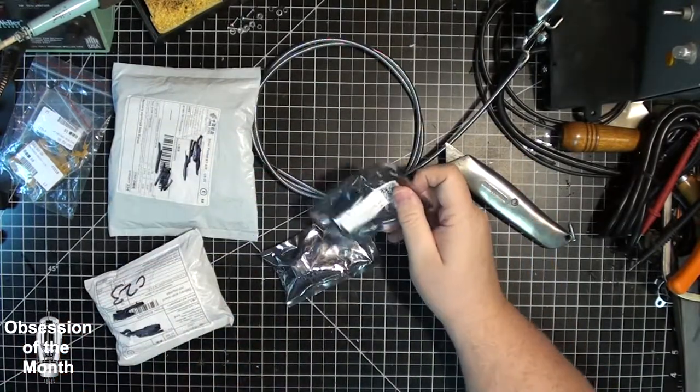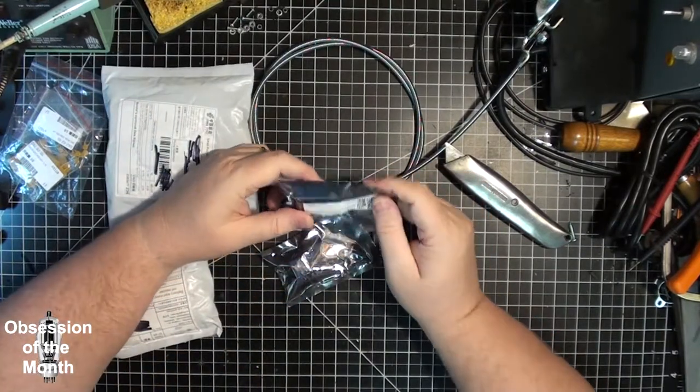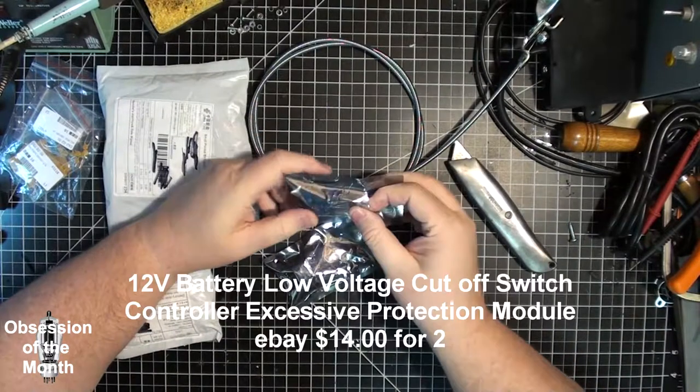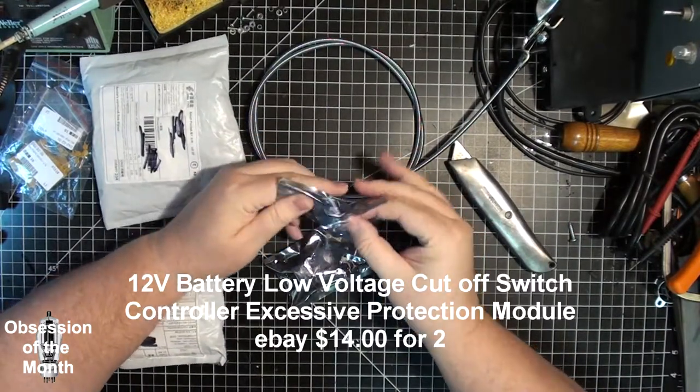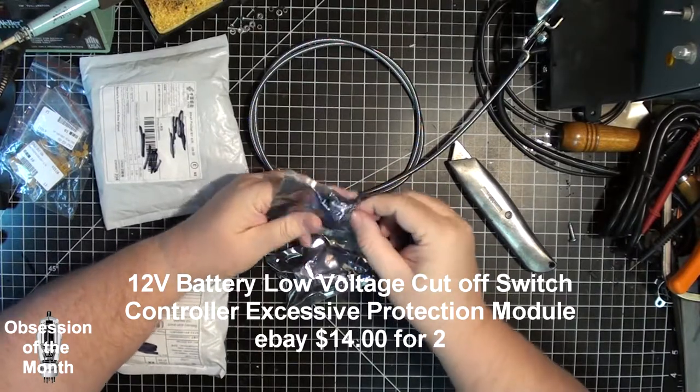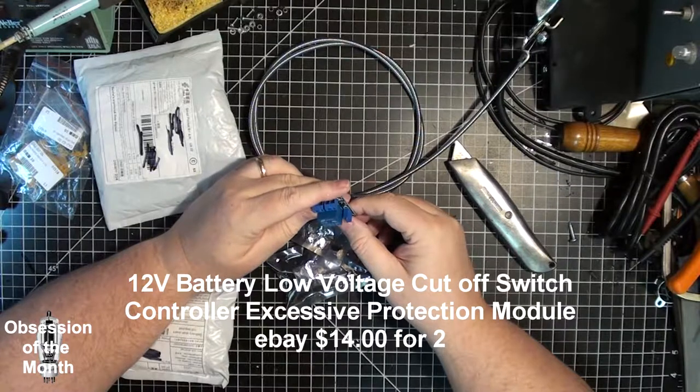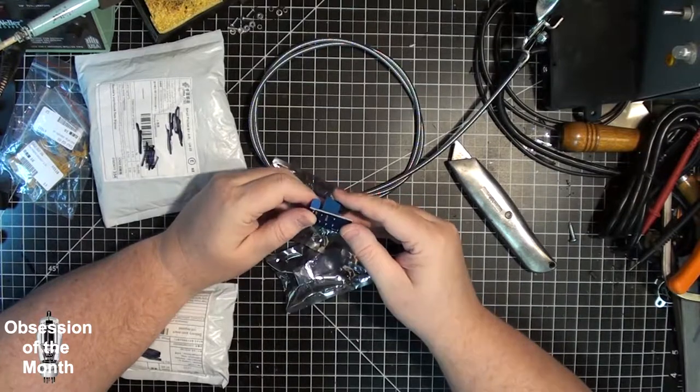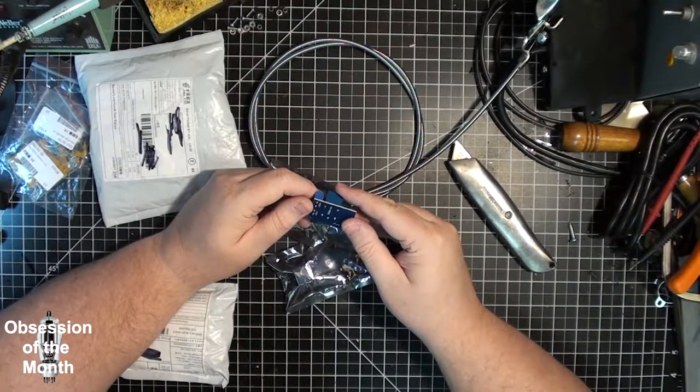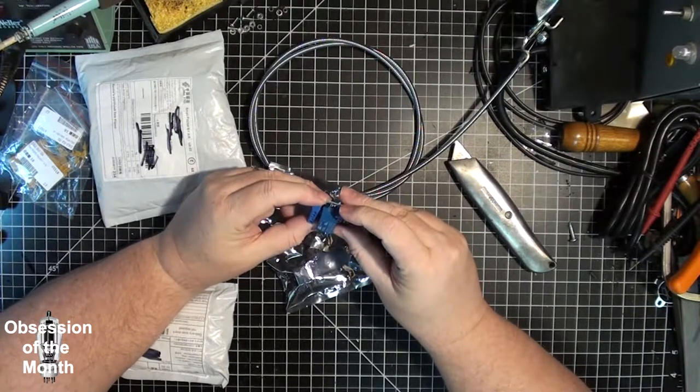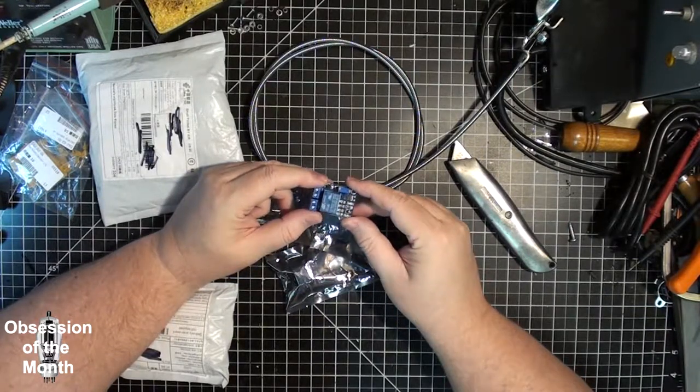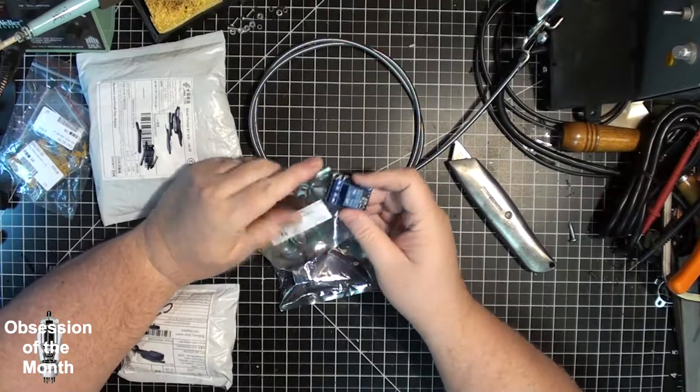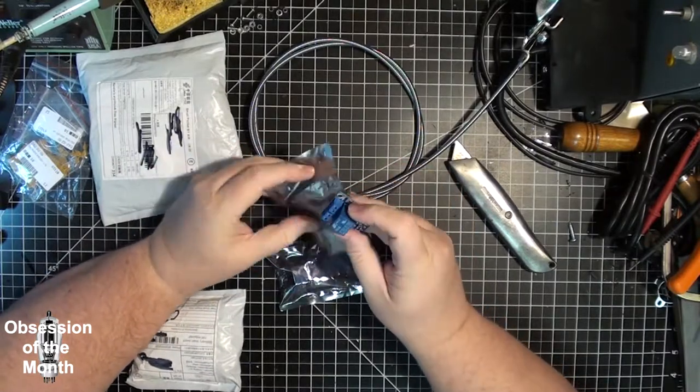And these are something I'm going to try out. These are low voltage disconnects. Basically, when voltage drops below a certain amount, it removes the load instead of doing an alarm. It just turns off the load.